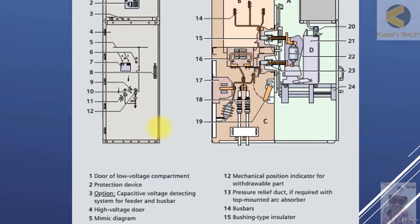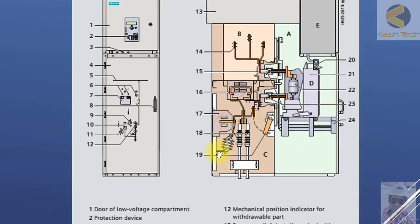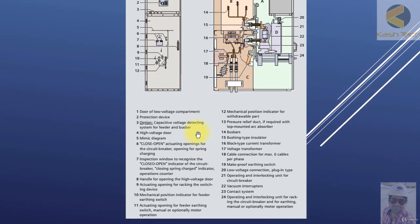As an example, I will open up one switchgear in which I will explain in detail the mimic and the internal components of the switchgear. Here you can see the VCB is shown at point number 22, and I will be explaining all these points in detail.